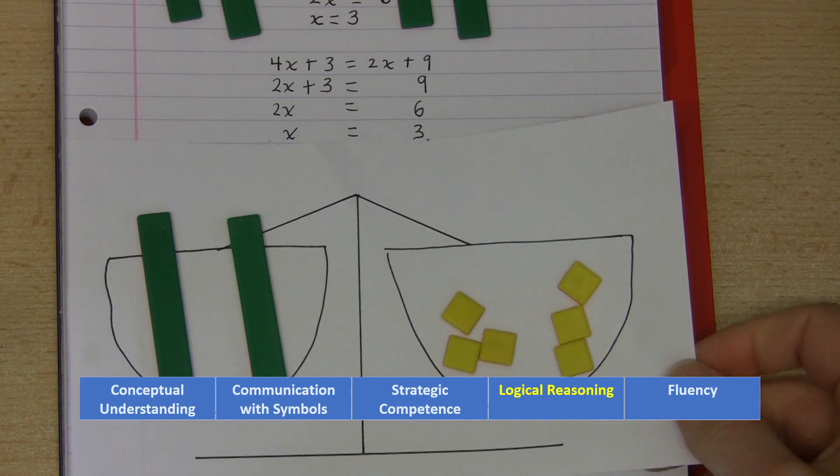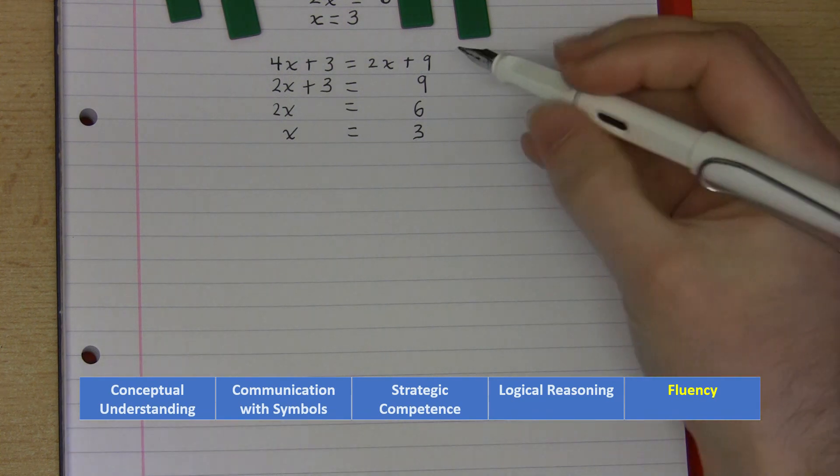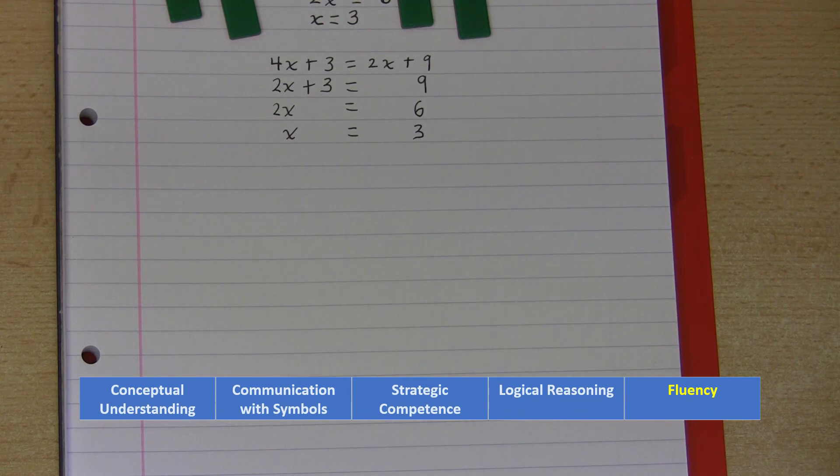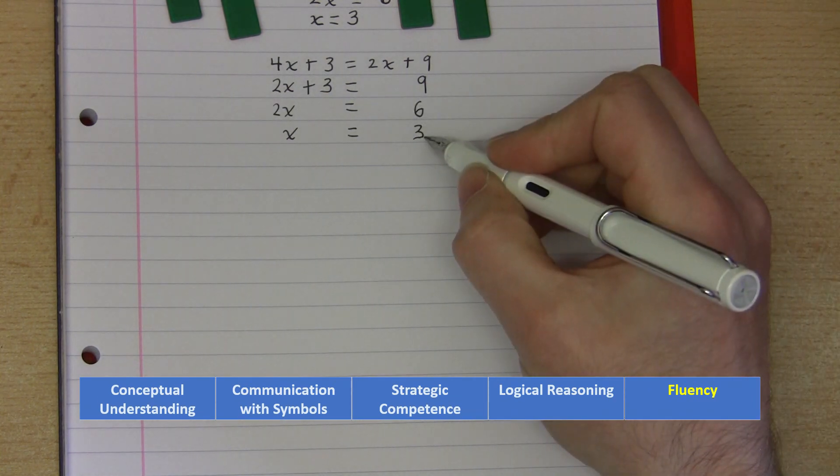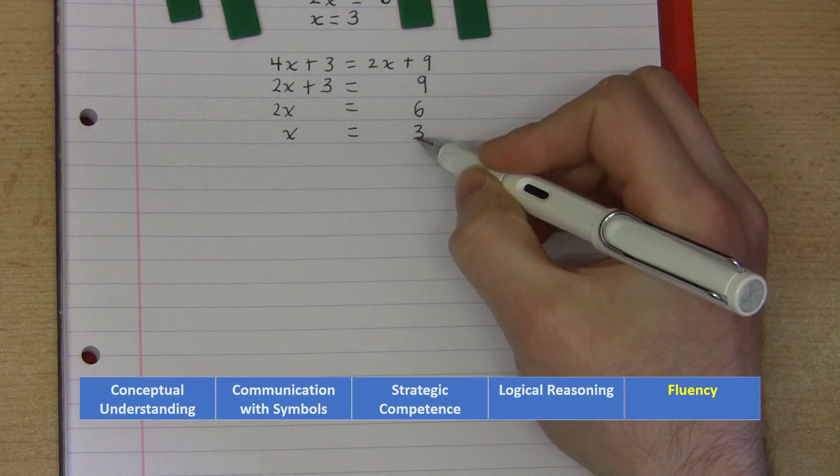The one proficiency I haven't talked about is fluency. Now yes fluency is about doing things accurately, and yes I would want my learners still to be able to perform a set of exercises of this type, but it shouldn't be about completing the exercises in the fastest time. It should be about accuracy and it should also be about checking the solution. So here I've reached the stage where I think that x is equal to three, but how can I check this solution?